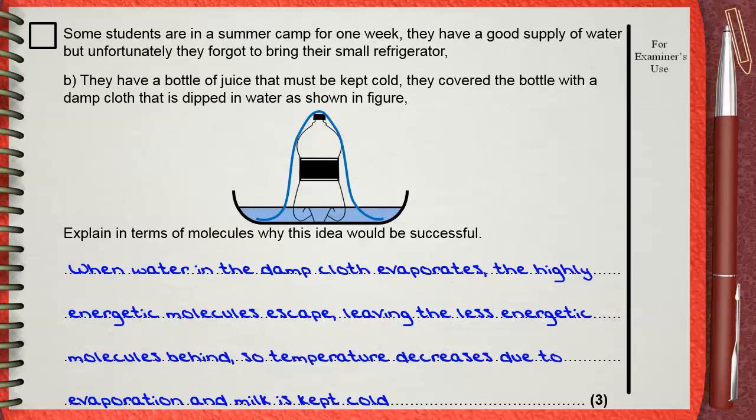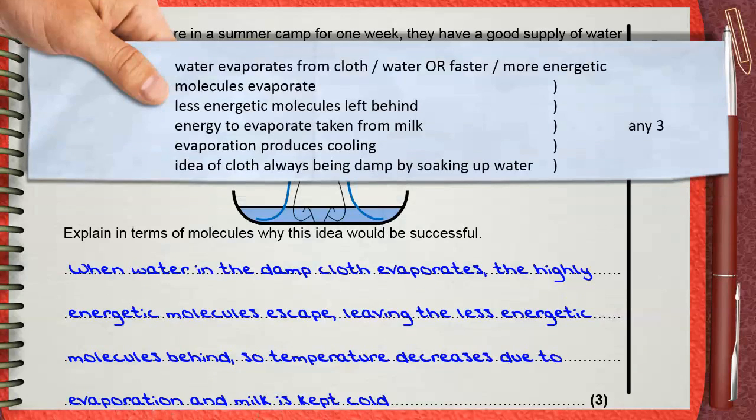Let's see the mark scheme. You can say any three of the following. First, water evaporates from cloth or from water in the dish. You can say faster or more energetic molecules evaporate.